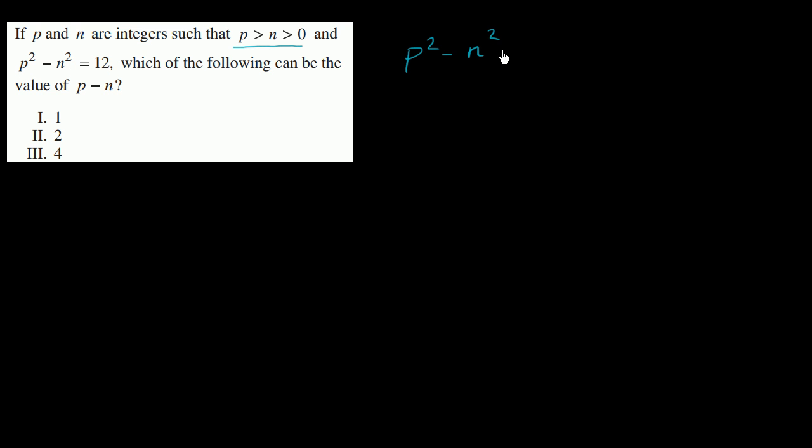If p and n are integers such that p is greater than n is greater than 0. Since p is strictly greater than n, that means they're two different integers — p is the larger of the two — and they're both positive, both greater than 0. They tell us that p squared minus n squared is equal to 12.